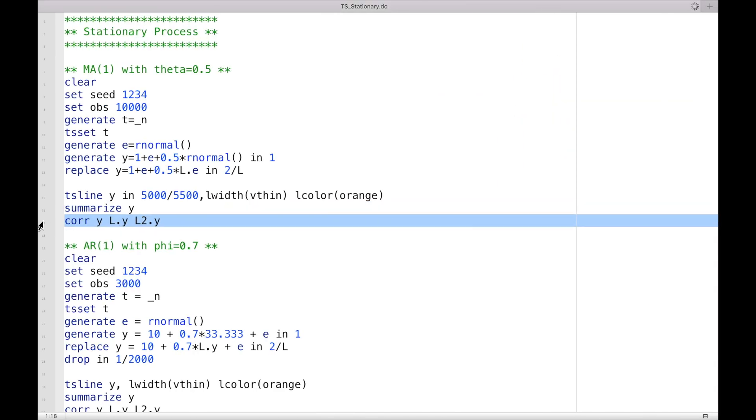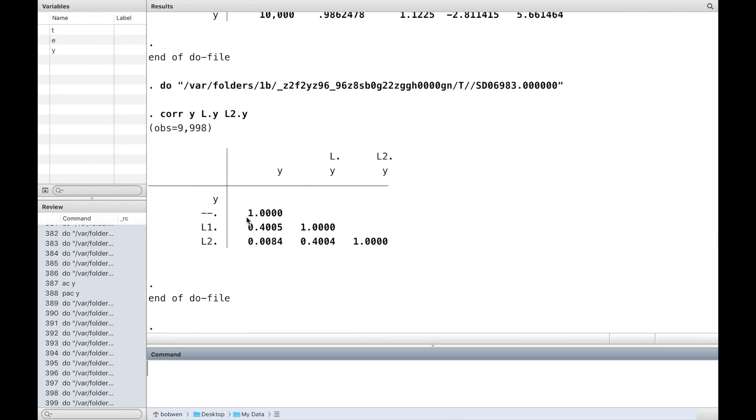The mean of the time series is close to our setting. The first autocorrelation is 0.4, which is equal to theta divided by 1 plus theta squared. And theta is 0.5 in this example. The second autocorrelation is almost zero, just as theory predicts.